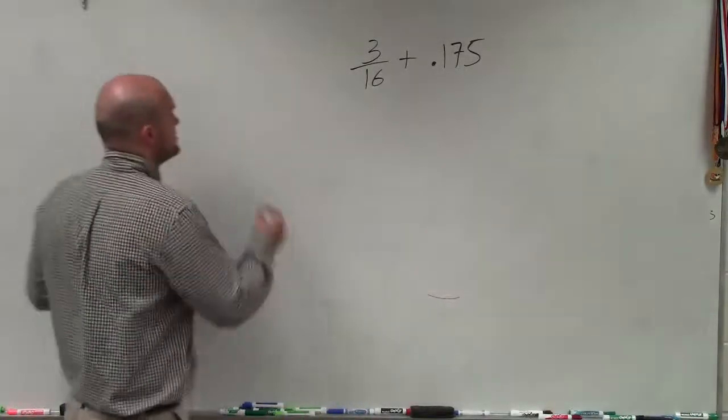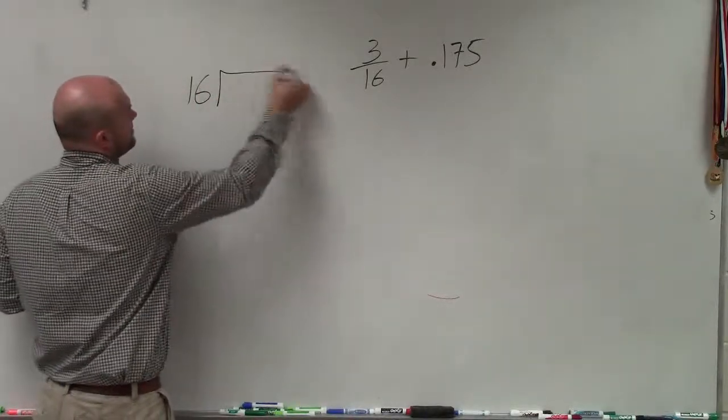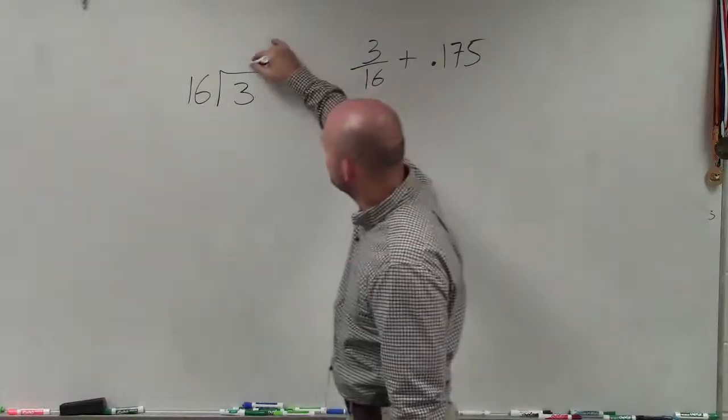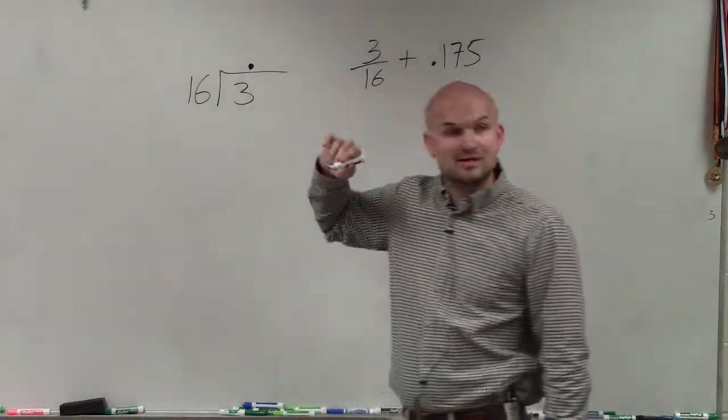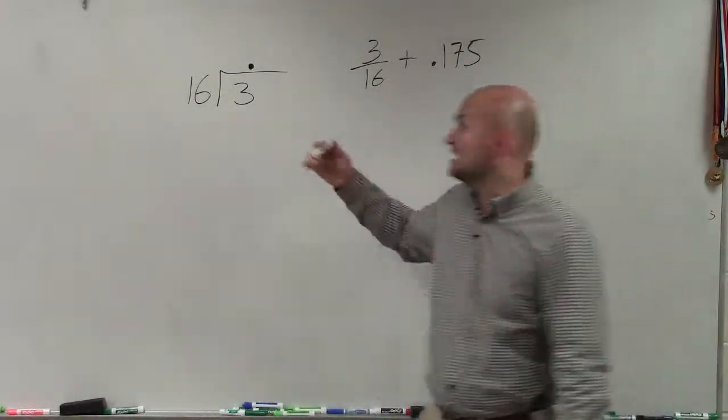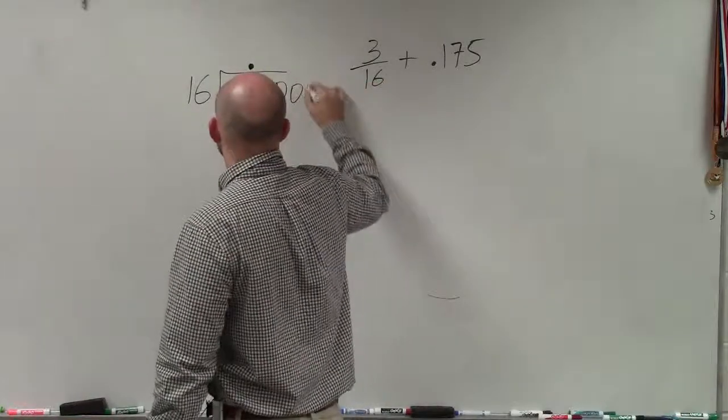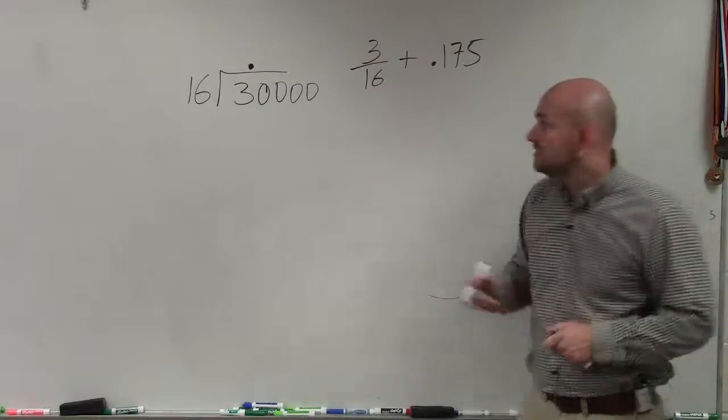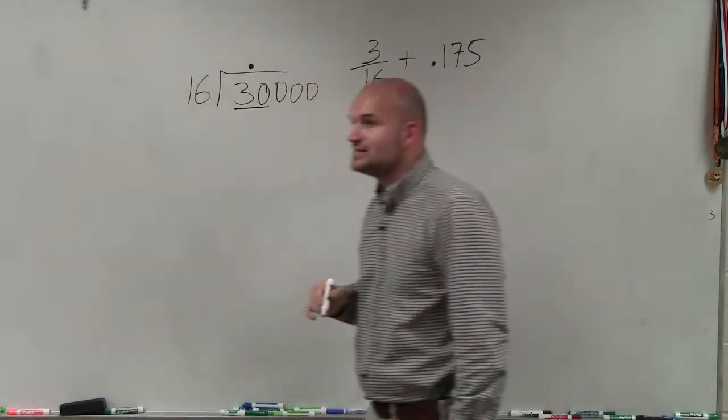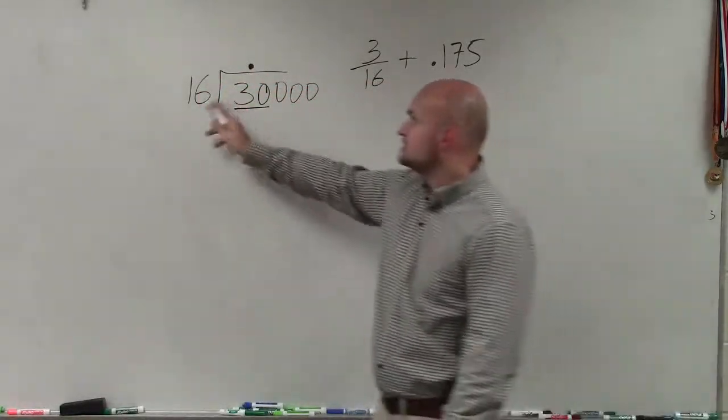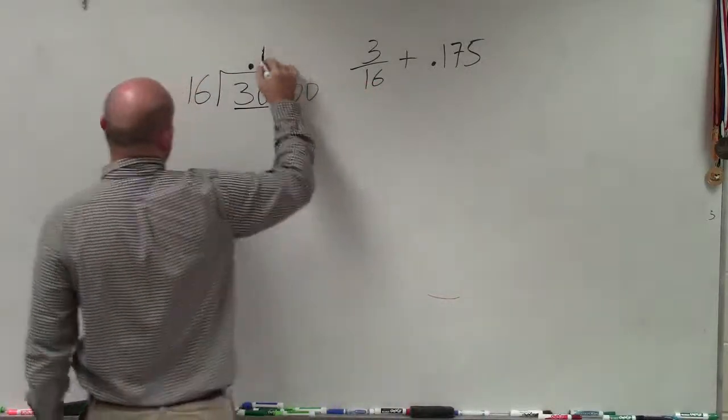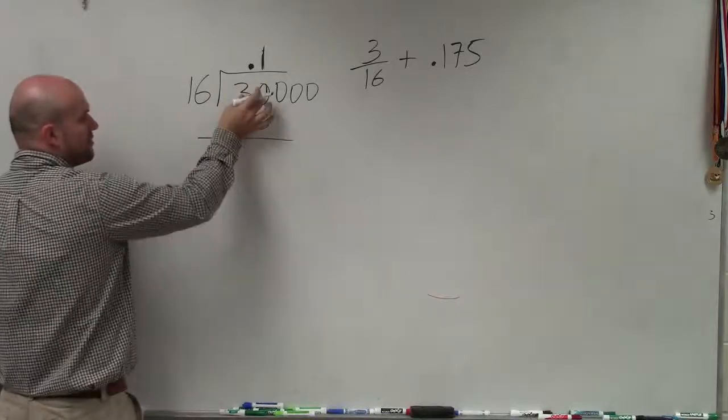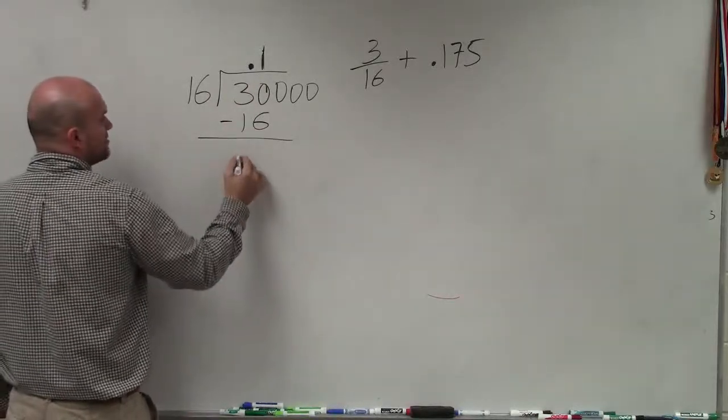All right. So let's convert this to a decimal. So 16 divided by 3. Obviously, 16 does not divide into 3. So we're going to have to put in a decimal point. Once we put in a decimal point, we pretty much have a unique bank of as many zeros as we possibly want to use. But we're only going to use as many as we need. So we always want to find the smallest number that 16 would divide into, which in this case is 30. 16 divides into 30 one time. 1 times 16 is 16. Subtract the two terms. 30 minus 16 is going to be 14.